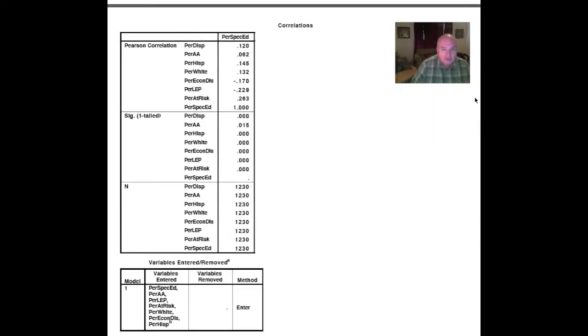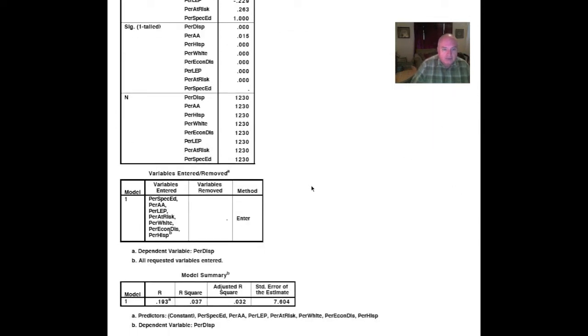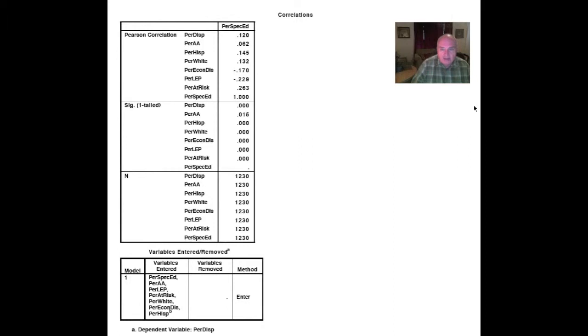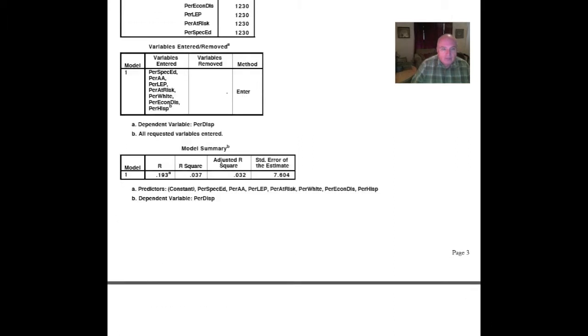The next thing that is of interest to us will be the variables entered section. Notice that none of the variables were removed. It kept all seven of them as they went through looking at the disciplinary placements of the percent. Now, what is interesting is that our model summary is pretty weak. 0.193 is a weak correlation. We can live with it, however.